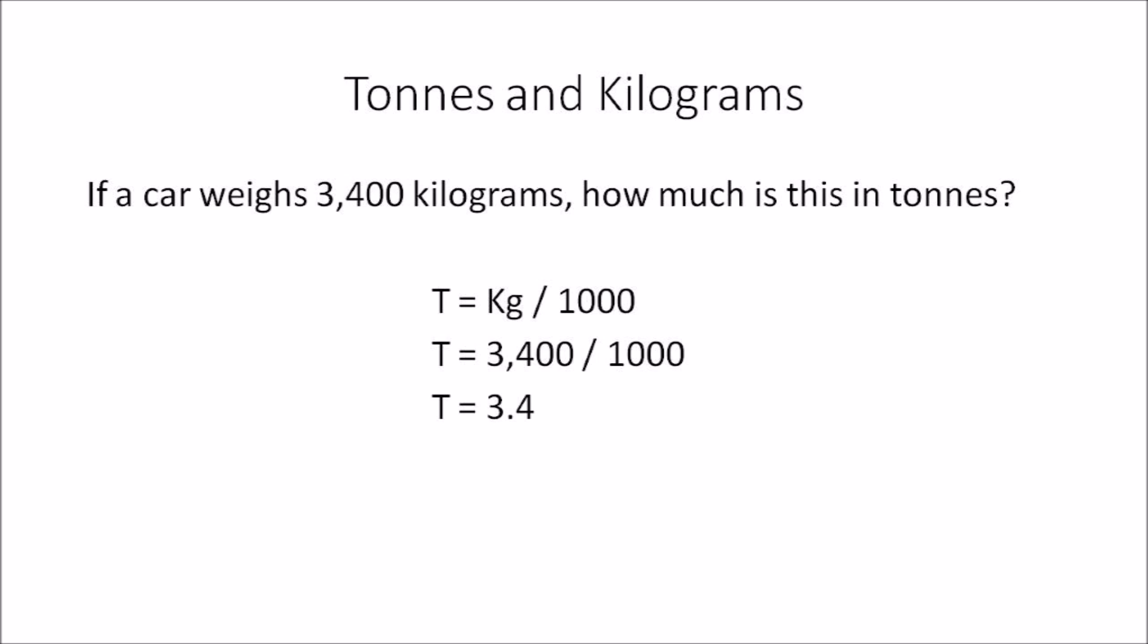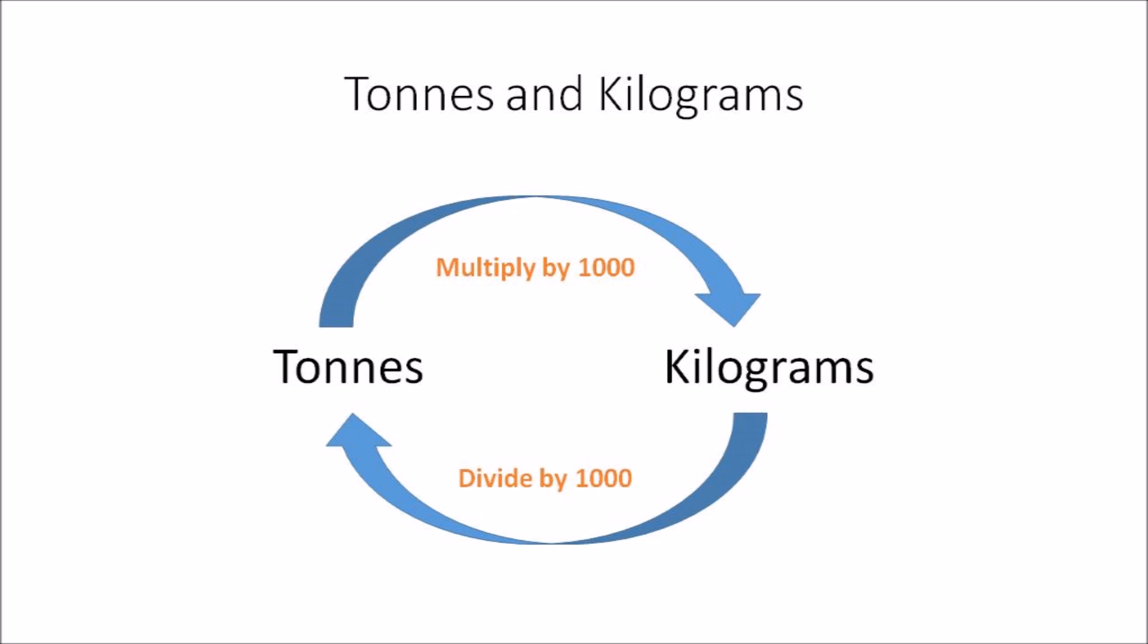In this example, if a car weighs 3400 kilograms, how much is this in tons? Tons equals kilograms divided by 1000, so T = 3400 ÷ 1000, and the answer you get is 3.4.